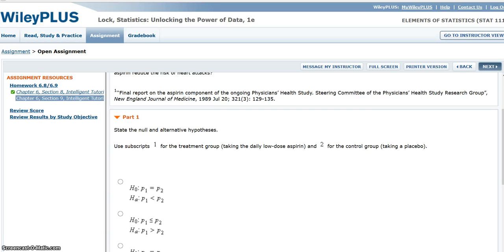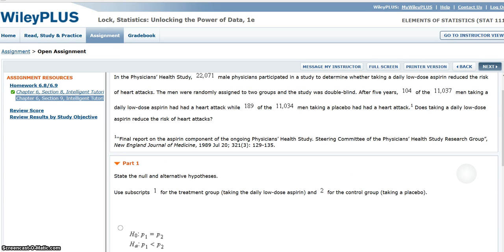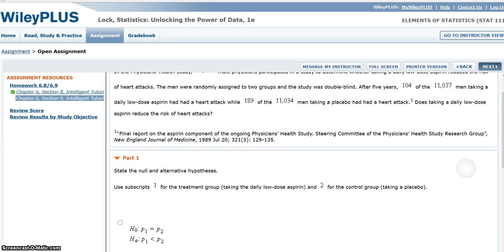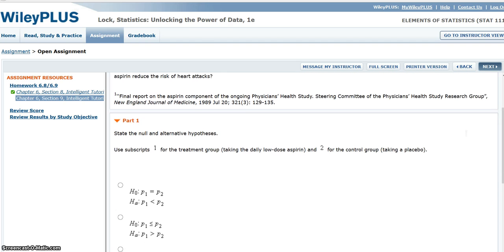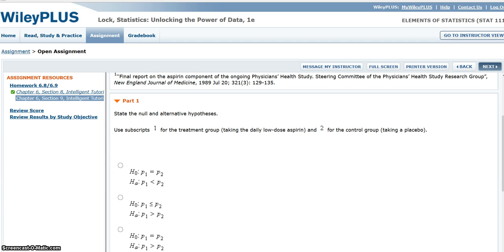Okay, so first we want to state the null and alternative hypotheses. Since we are checking to see if the risk of heart attacks is lower in the men taking the low-dose aspirin, which is group 1, we're looking to see if P1 is less than P2. That's going to be our alternative hypothesis.